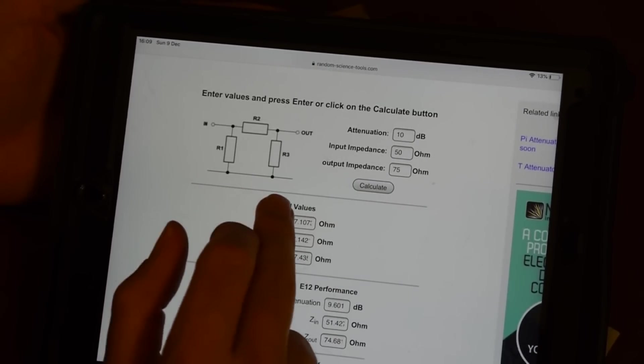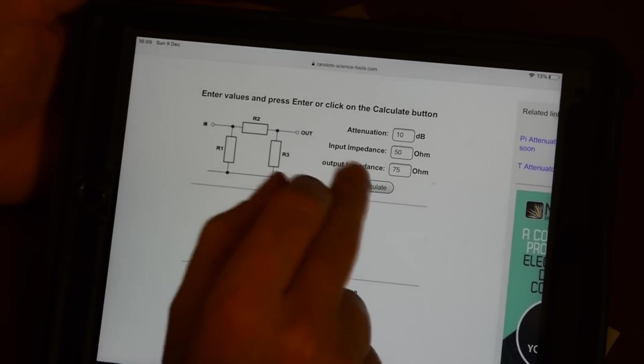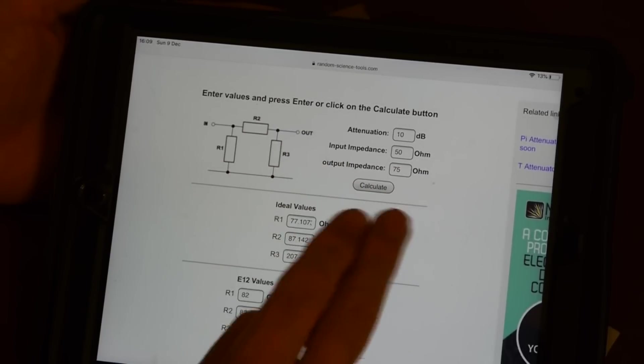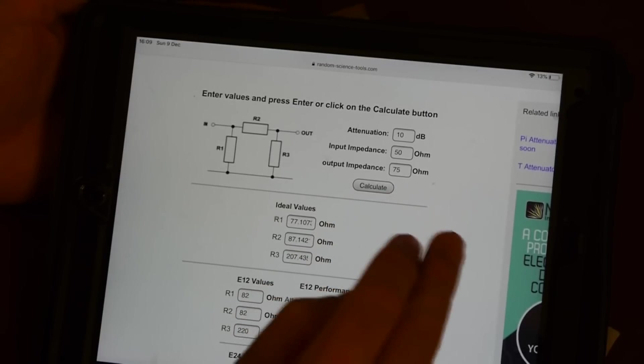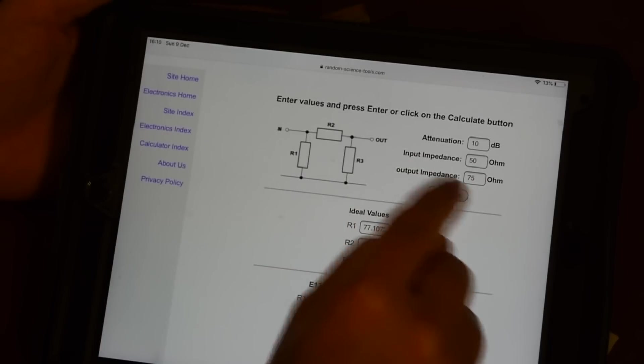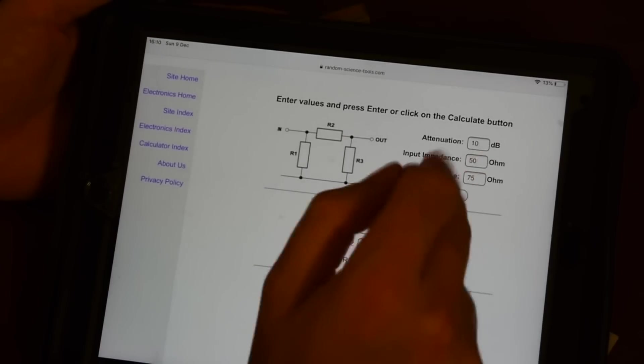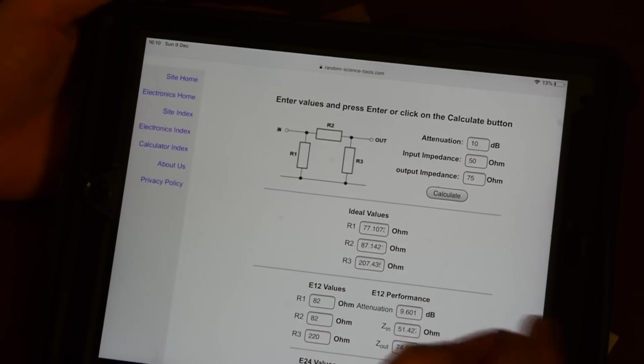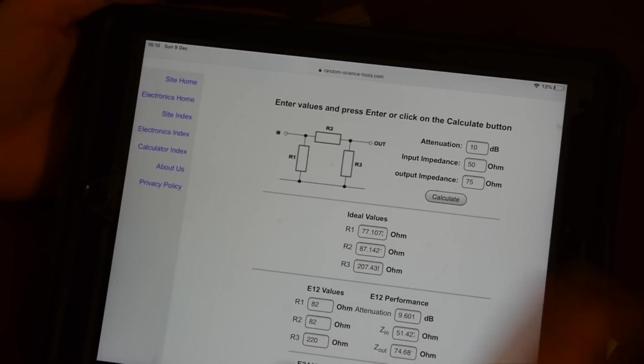One of the things about a pi attenuator is you can have a different input and output impedance. Here I've specified that the input impedance is going to be 50 ohms and the output impedance is going to be 75 ohms. All you've got to do is type in the impedances we want. In my case it's 50 ohms and 75 ohms. We're going to choose a 10 dB attenuation factor. 10 seemed nice and 10 is a nice number to work with.